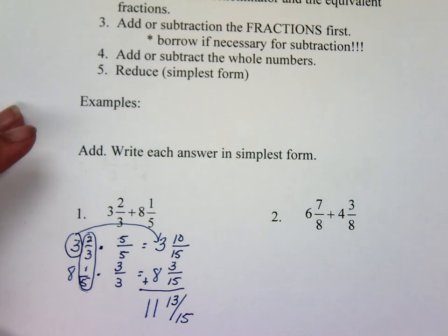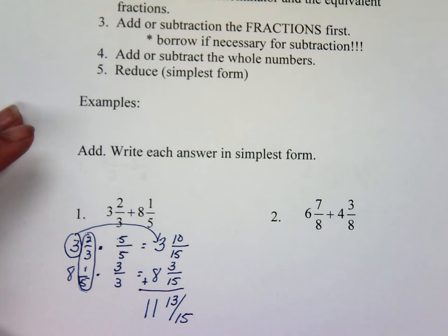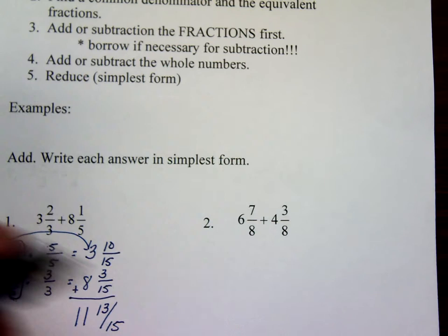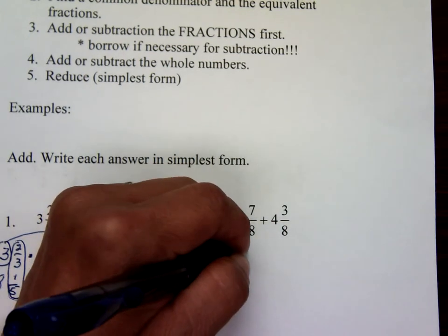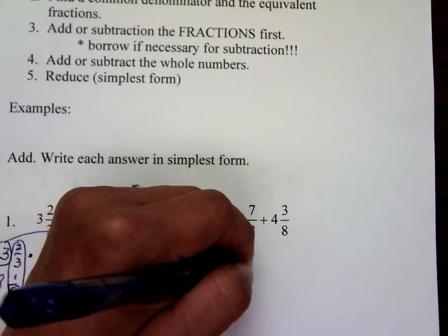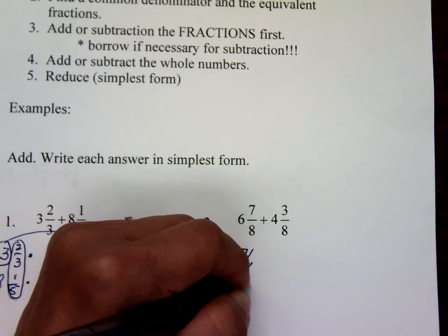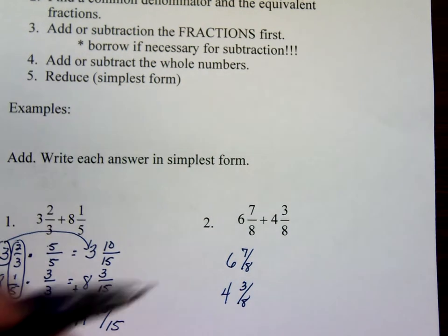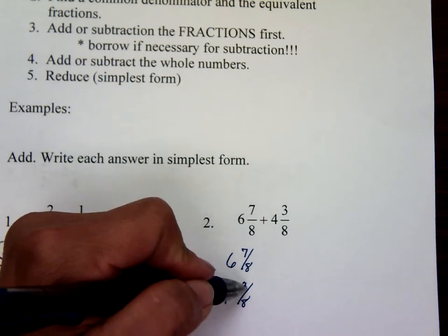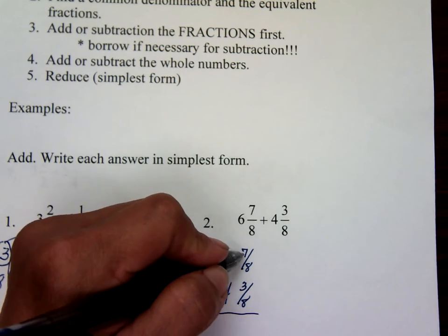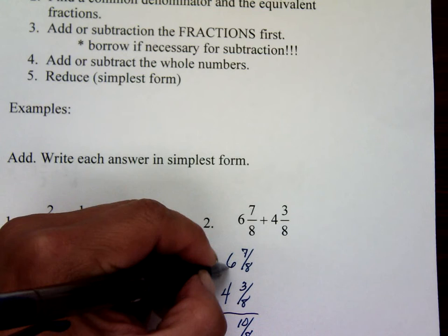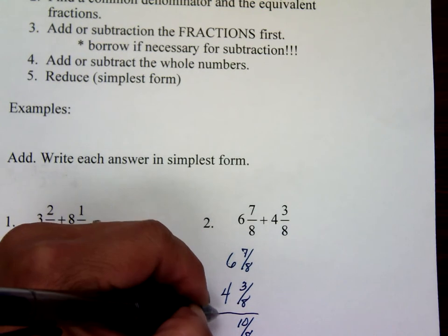Try number two on your own, and then when you're ready, push play. For number two, you should have set it up vertically: six and seven-eighths plus four and three-eighths. The denominator is the same, so all you have to do is add. Seven plus three is ten-eighths, and six plus four is ten.